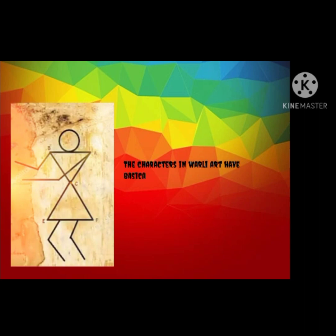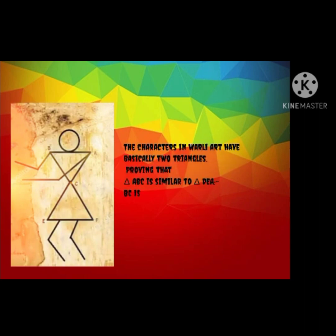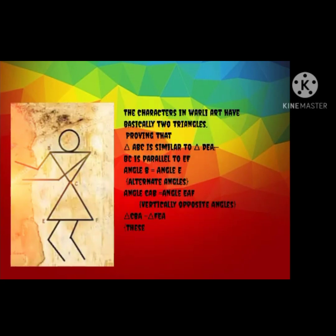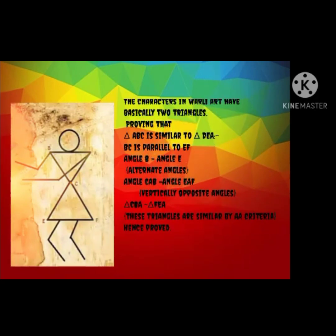The characters in Warli art have basically two triangles. Prove that triangle ABC is similar to triangle DEA. BC is parallel to EF, angle B equals angle E as alternate angles, and angle CAB equals angle EAF as vertically opposite angles. Therefore, triangle CBA is similar to triangle FEA.